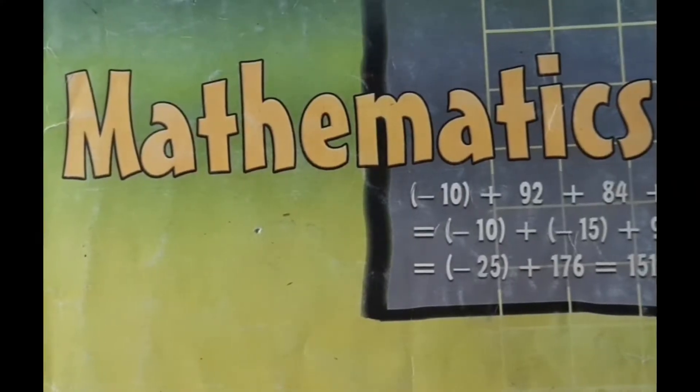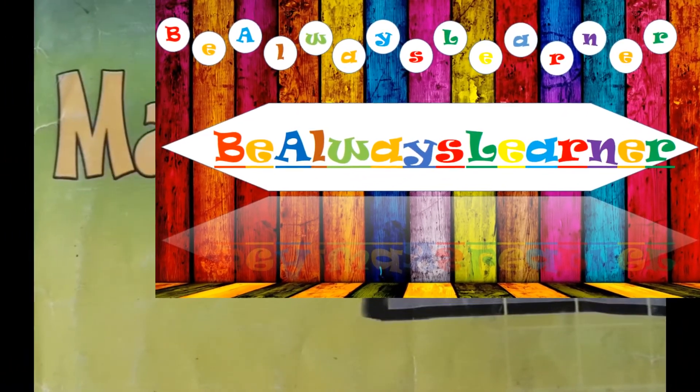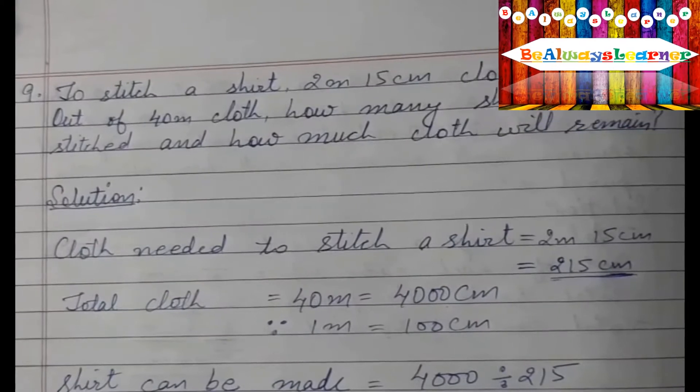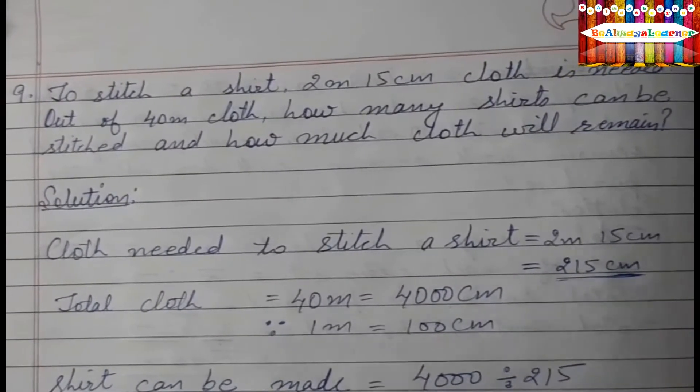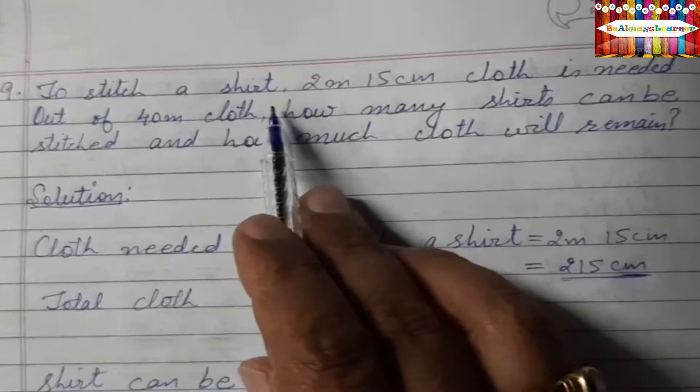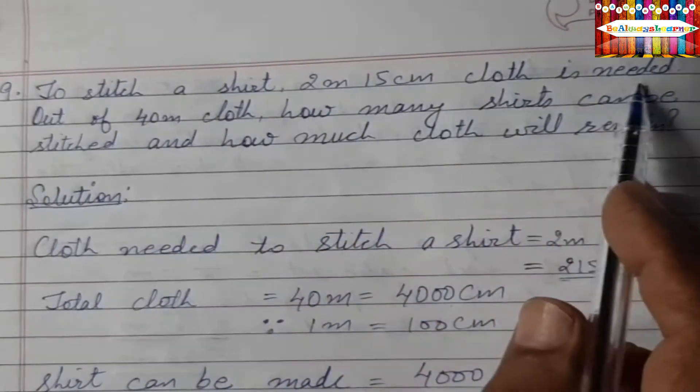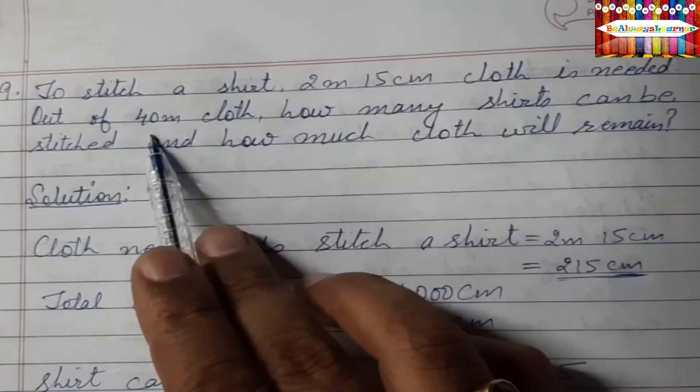Welcome to our channel Be Always Learner. Now we are solving exercise number 1.2. We are solving 9th question. The question is to stitch a shirt, 2m 15cm cloth is needed out of 40m cloth.